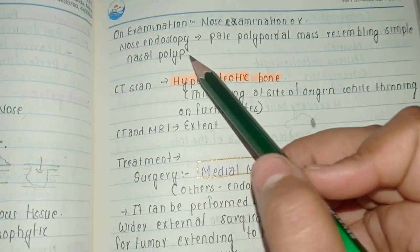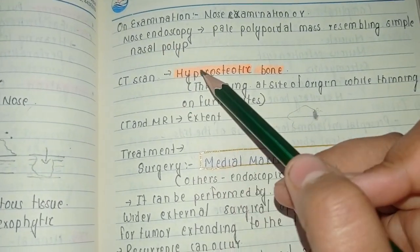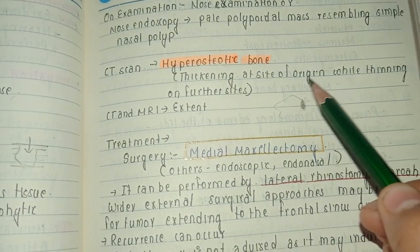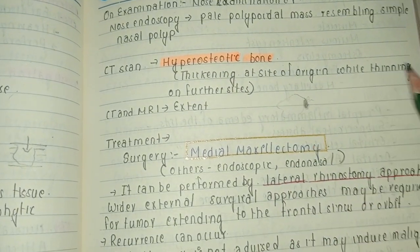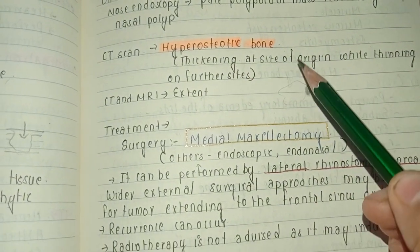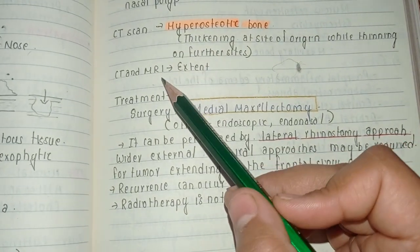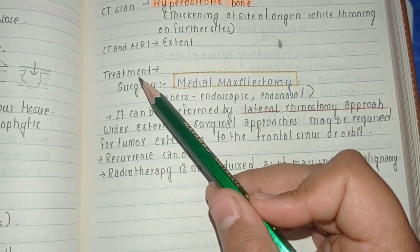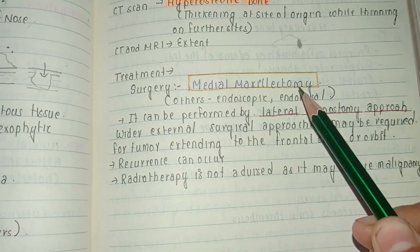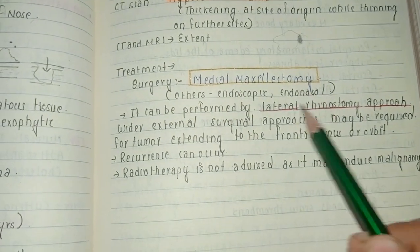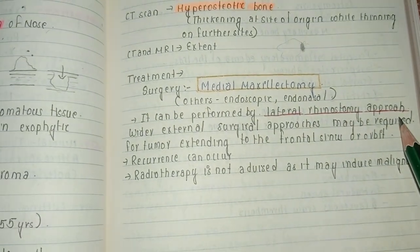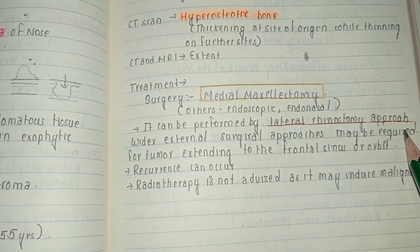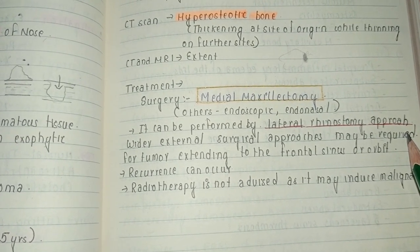On endoscopic examination, there is a pale polypoidal mass resembling a simple nasal polyp. On CT scan, hyper-osteotic bone is seen — thickening at the site of origin with thinning on the further sides. For assessing extent, MRI or CT scan is needed. The main treatment of choice is medial maxillectomy with lateral rhinotomy approach. Thank you, hope you liked this video — please subscribe for such videos.